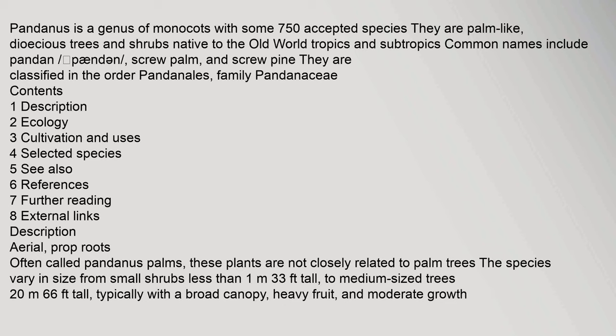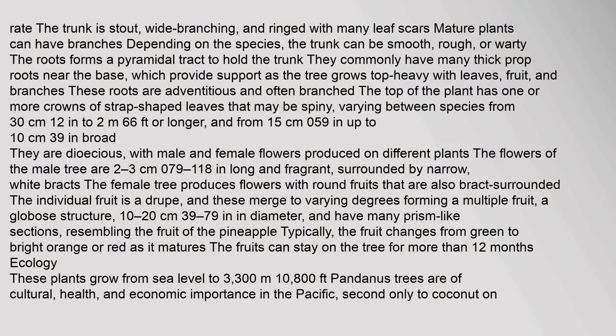Often called pandanus palms, these plants are not closely related to palm trees. The species vary in size from small shrubs. The trunk is stout, wide branching, and ringed with many leaf scars. Mature plants can have branches depending on the species. The trunk can be smooth, rough, or warty. The roots form a pyramidal tract to hold the trunk.